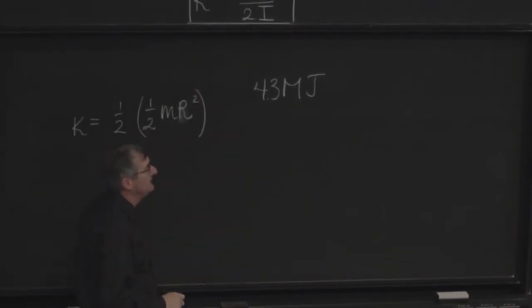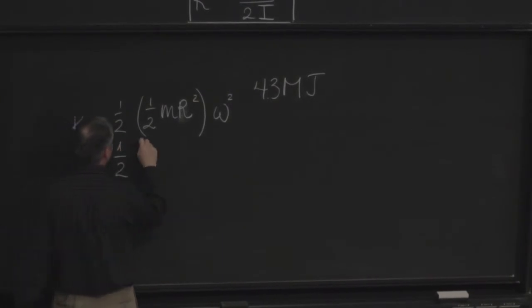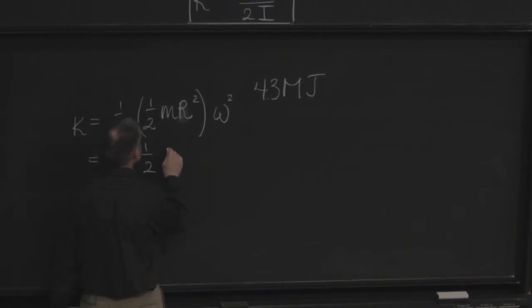And omega now, we're given revolutions per minute, so that means I have to convert. Let's see. 20 pounds is close enough to 10 kilograms. I'm supposed to divide by 2.2, so it should be more like 9. All right, fine. Be that way.